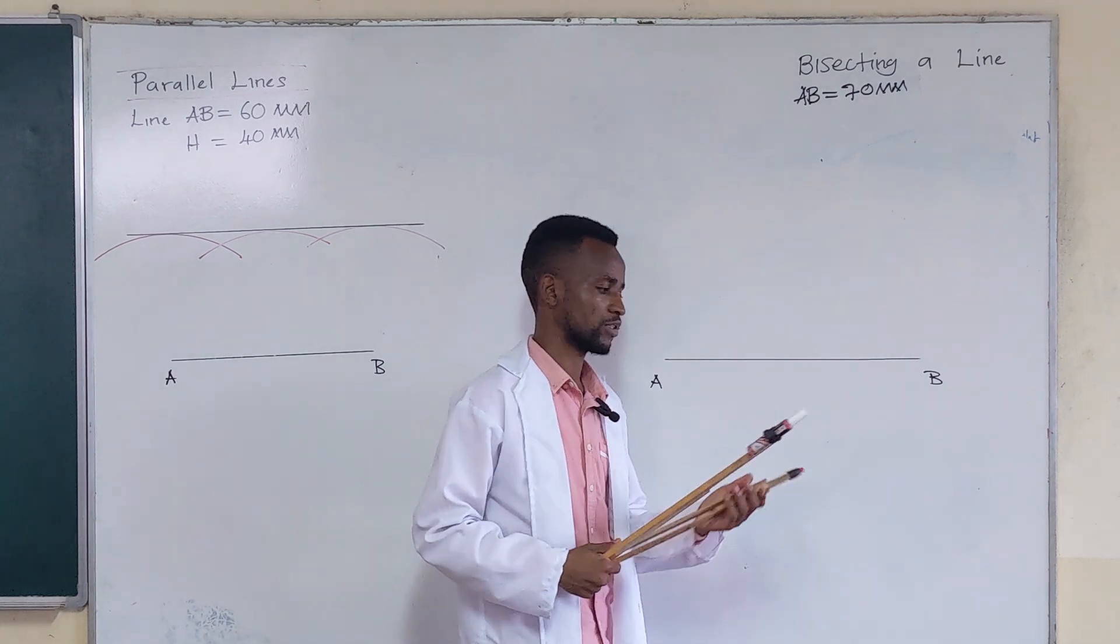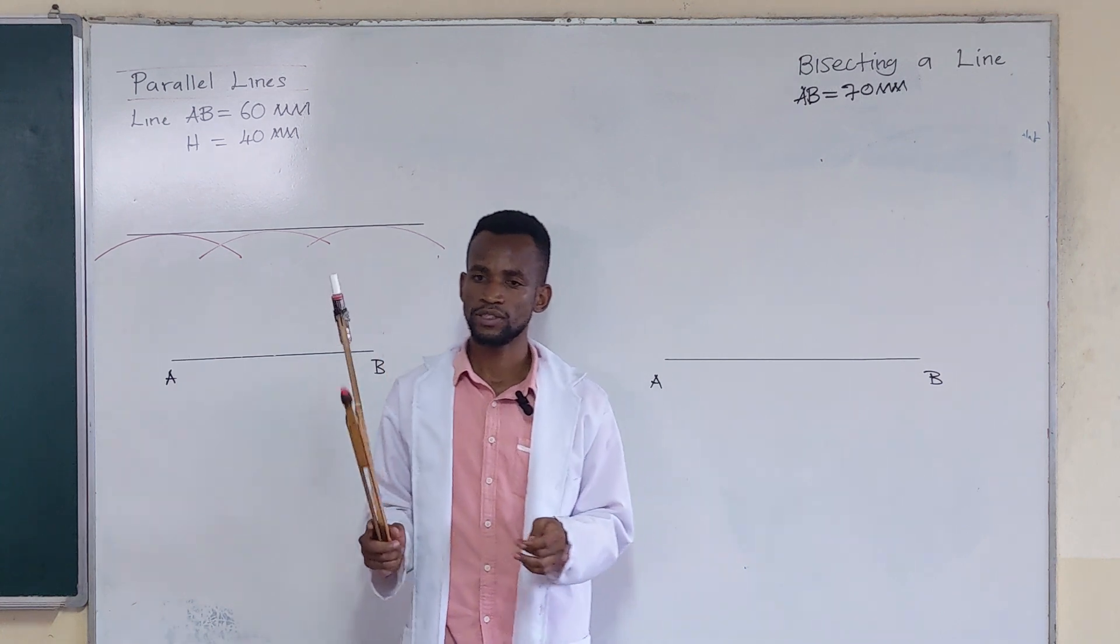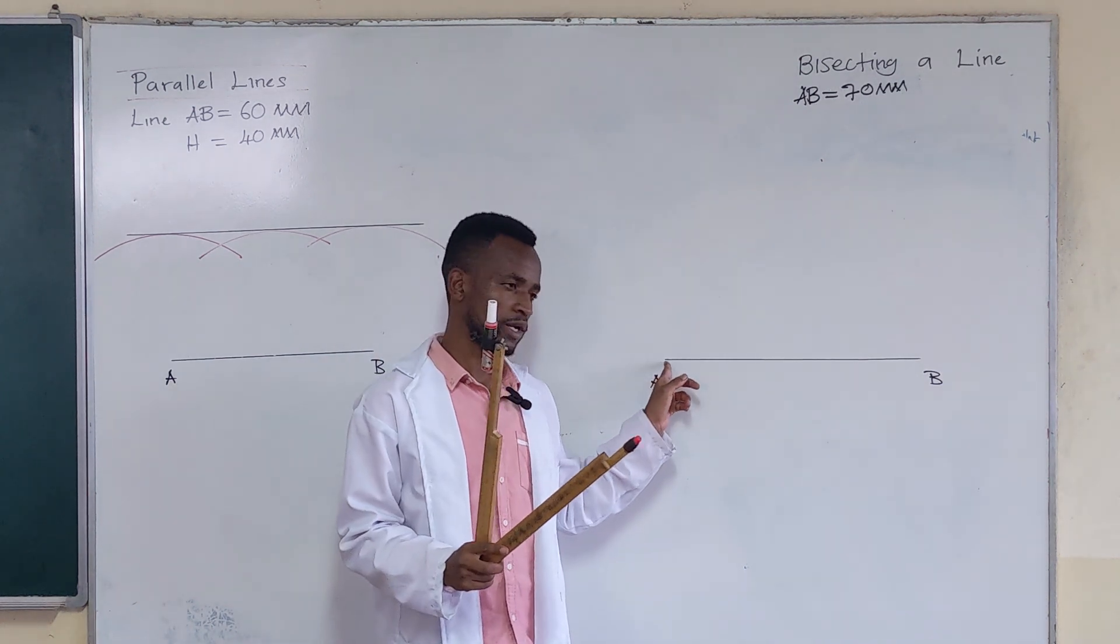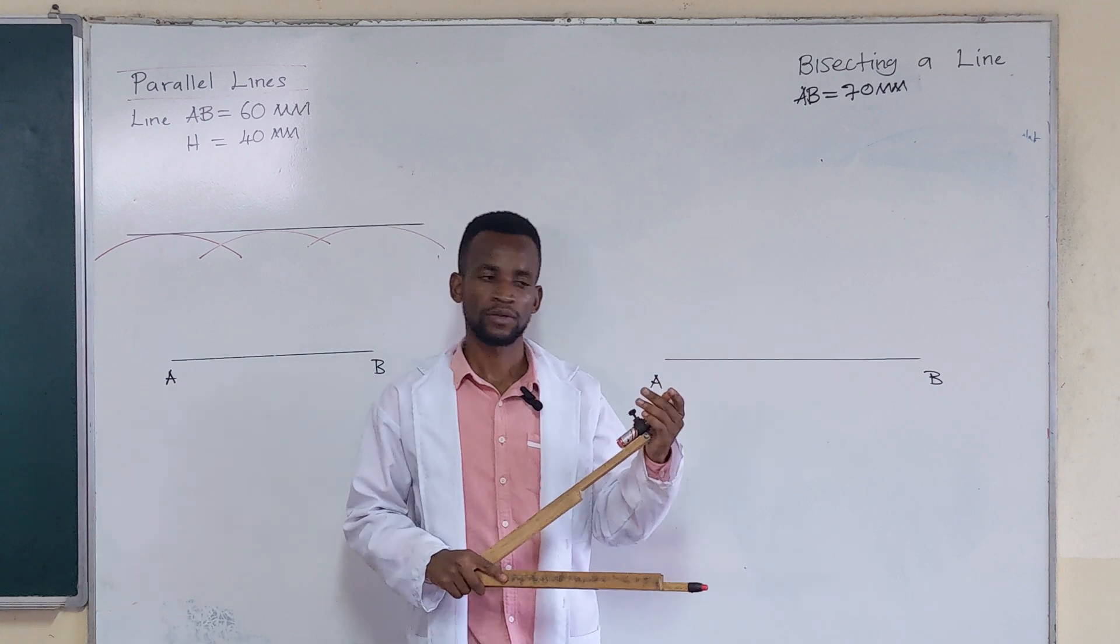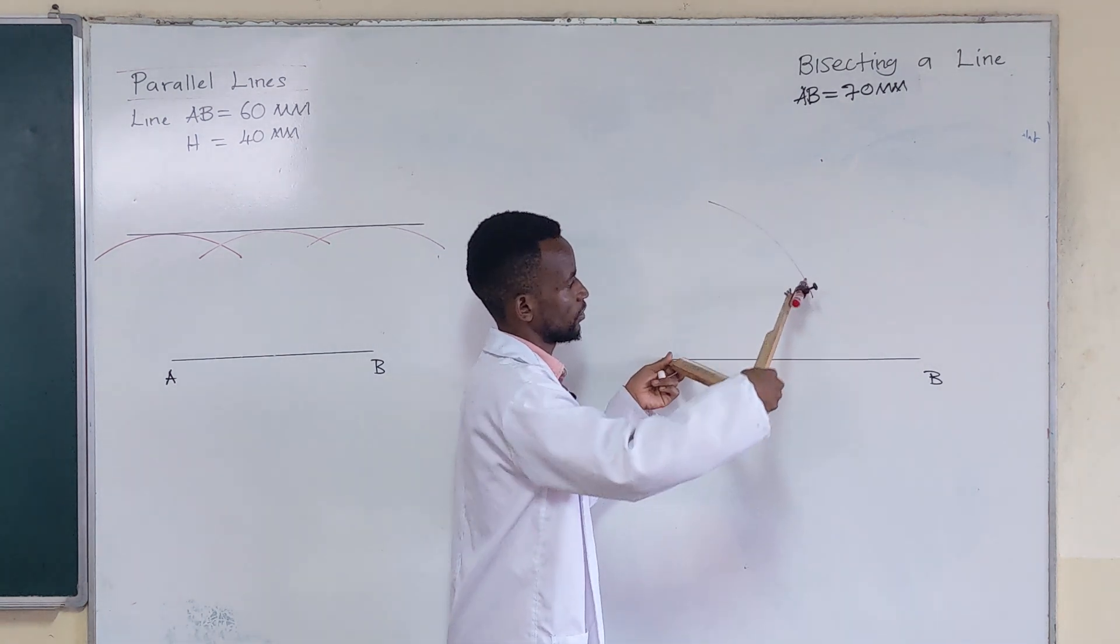If this is more than half, then you place it at one endpoint of the line, for example point A here. At point A, you strike an arc like that and another one like that.